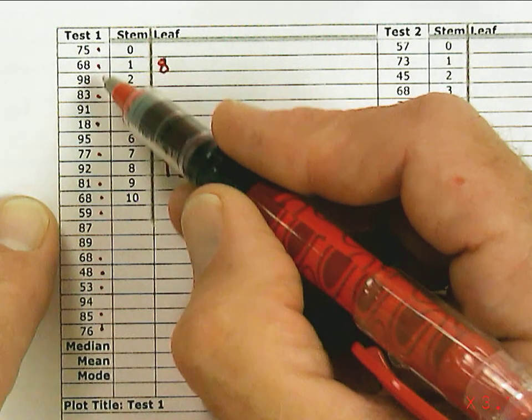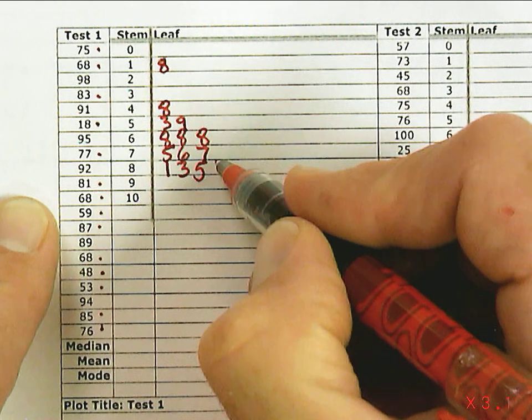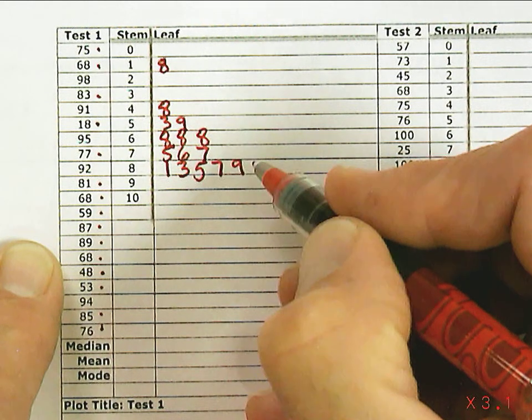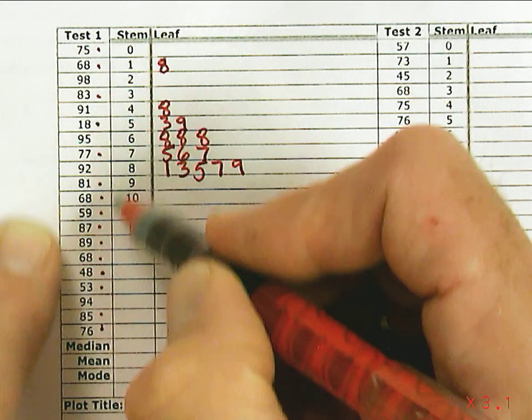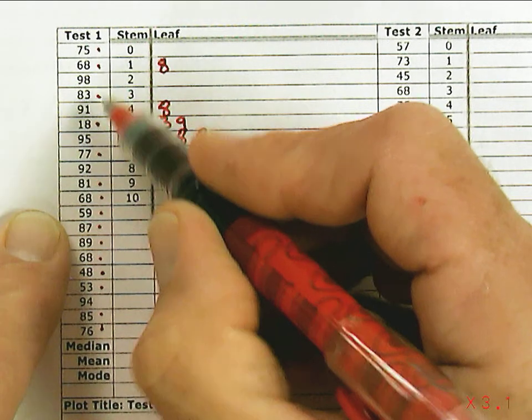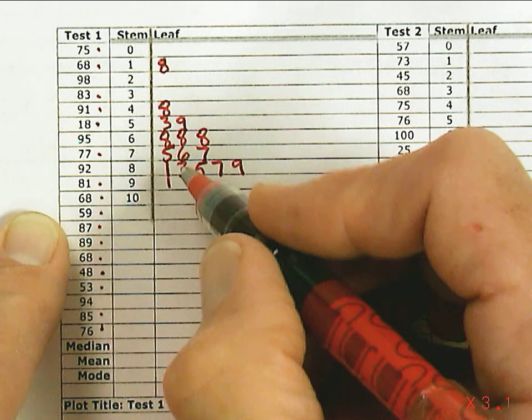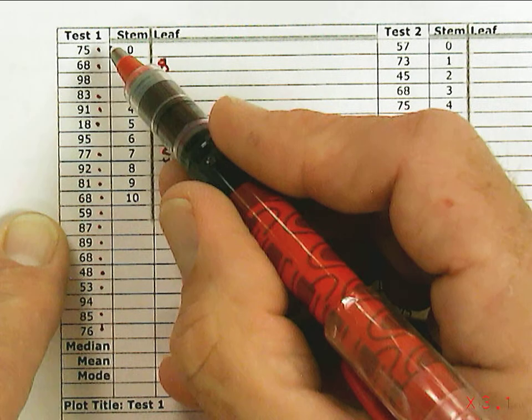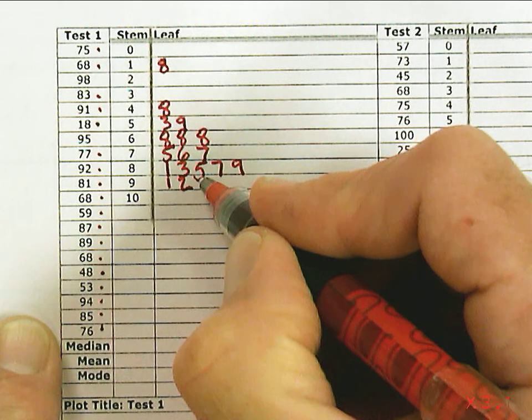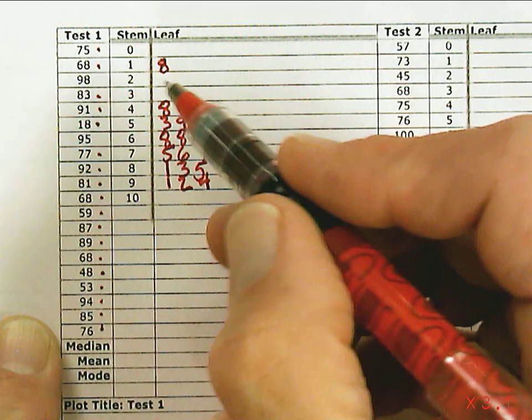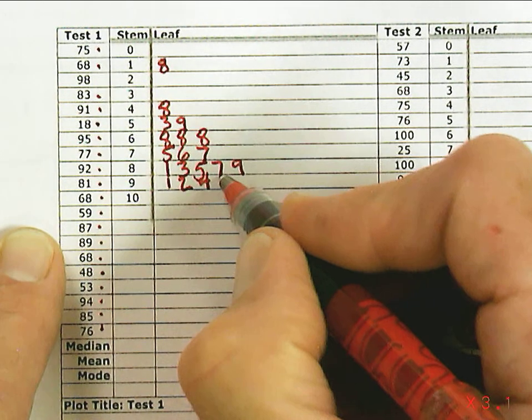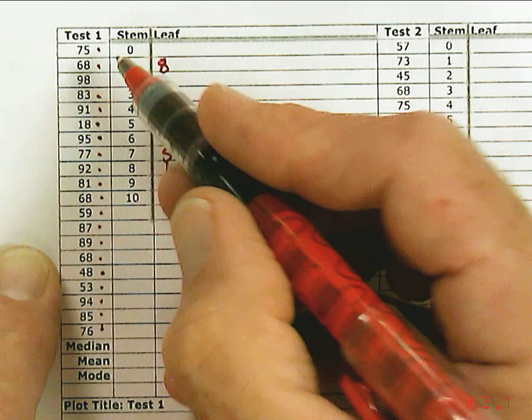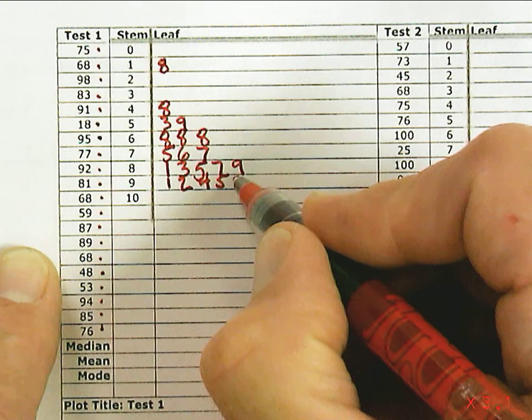85 and then 87, then 89. Looks like I only have odd 80s in this case. Then into the 90s: 91, 92, 94, 95, and then one more, I think, a 98. And I'm done.